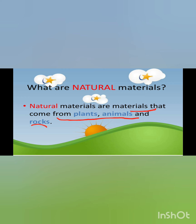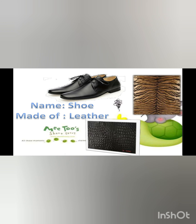You read a sentence about natural materials in your learner's book — and this slideshow gives the answer as well: a natural material is something that comes from plants, animals, and rocks. The second statement is: natural materials come from nature. Now, here are some objects made from natural materials. Shoes are made of leather, and leather is made from the skin of animals — so it is a natural material.